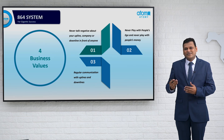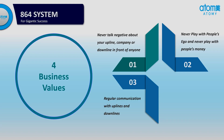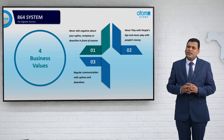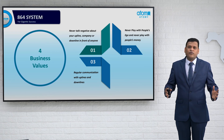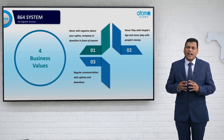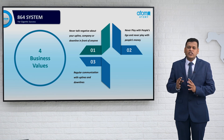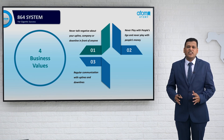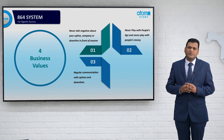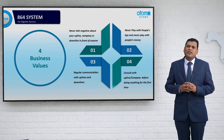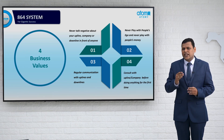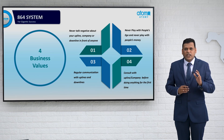The third business value is continuous communication between upline and downline. We have seen some uplines block downline numbers and some downlines block upline numbers. In our system, nobody will be successful without a balanced system — left and right should be balanced. For that, we need to continuously talk with each other.